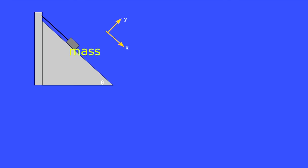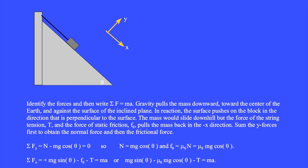The mass sits on the incline and is tied to the wall by a string. Please press pause while you identify which forces act on the mass and write the sum of the forces equals mass times acceleration. Gravity pulls the mass downward toward the center of the earth and against the surface of the inclined plane. In reaction, the surface pushes on the block in a direction perpendicular to the surface. The mass would slide downhill, but the string tension T and the static friction Fs act in the minus x direction. Sum the y forces first to obtain the normal force and then the frictional force. Once again, the angle of the incline is theta, and we put theta here also to obtain the x and y components of the weight.